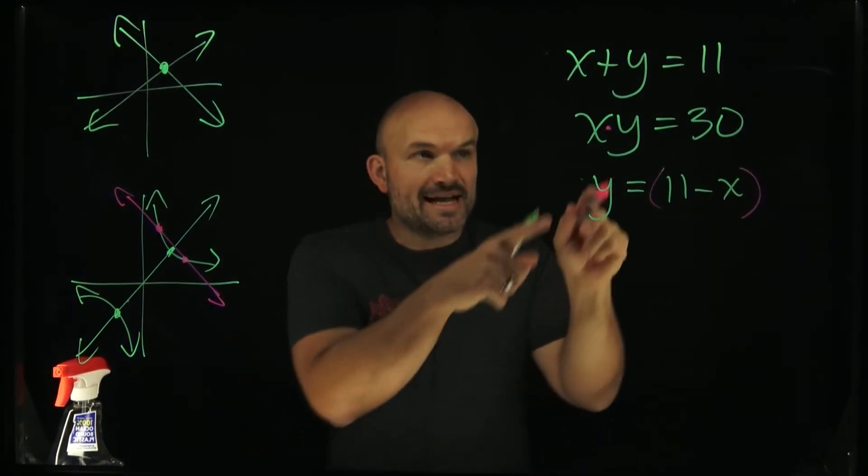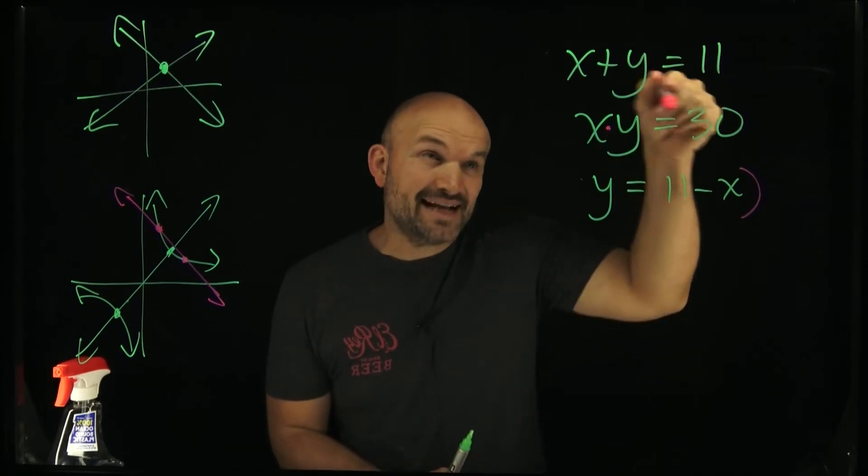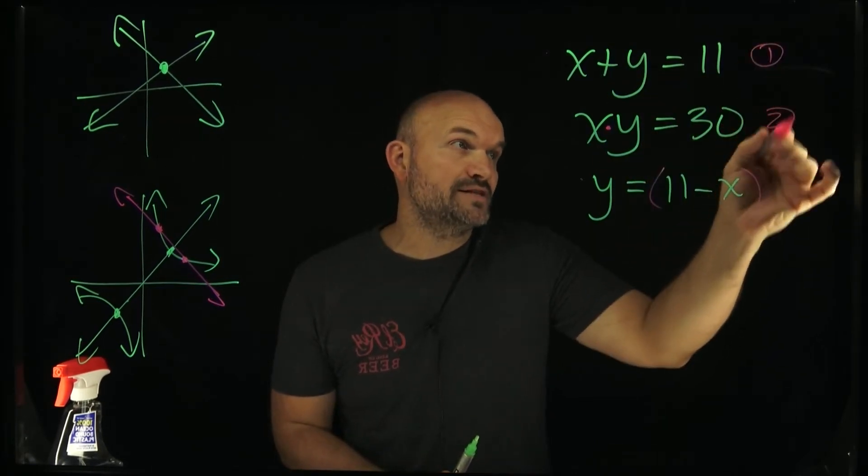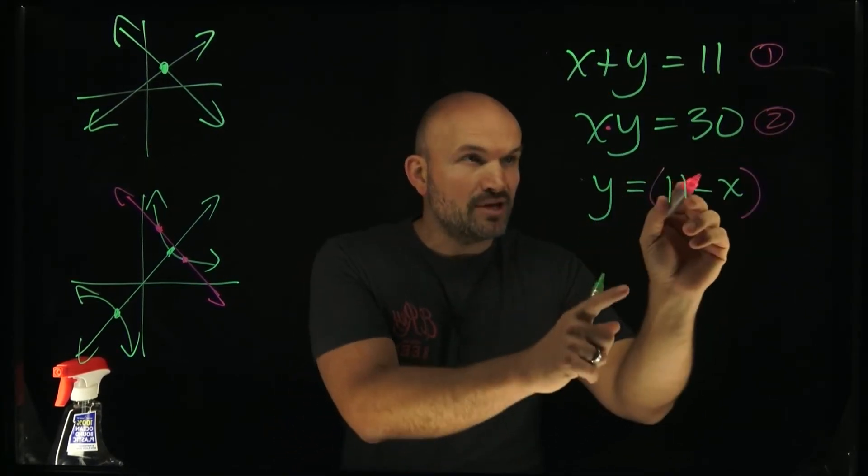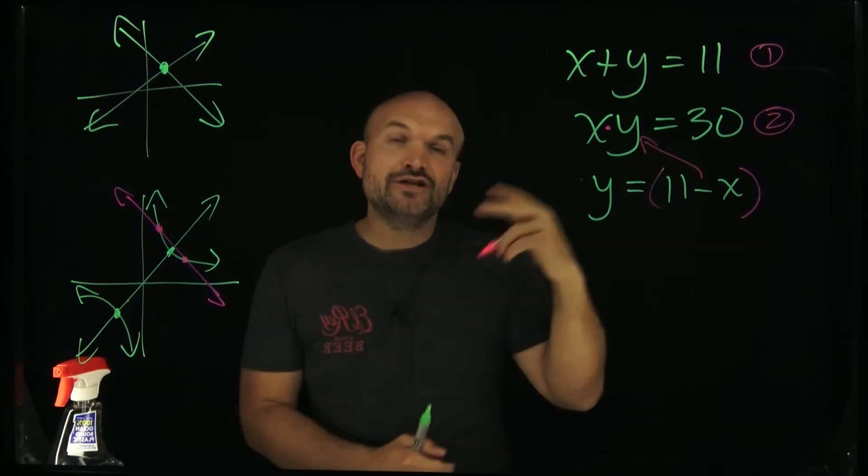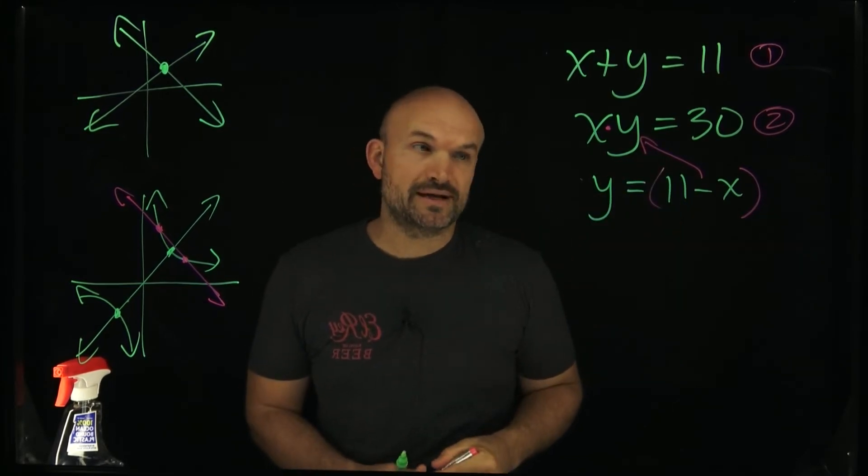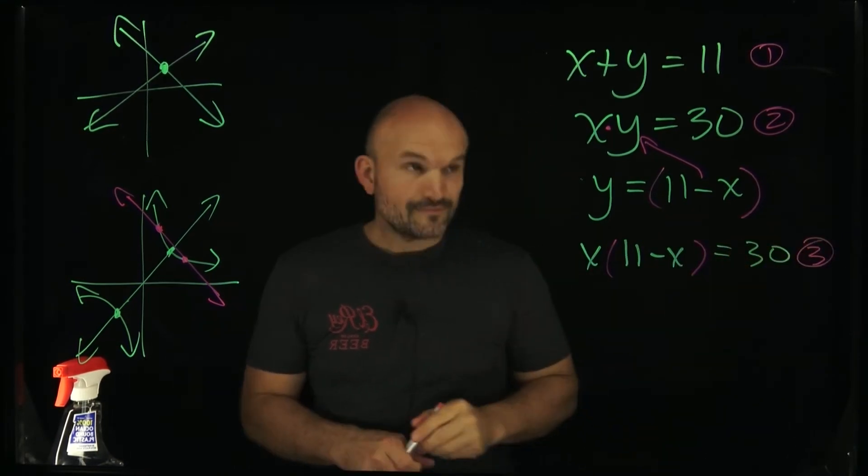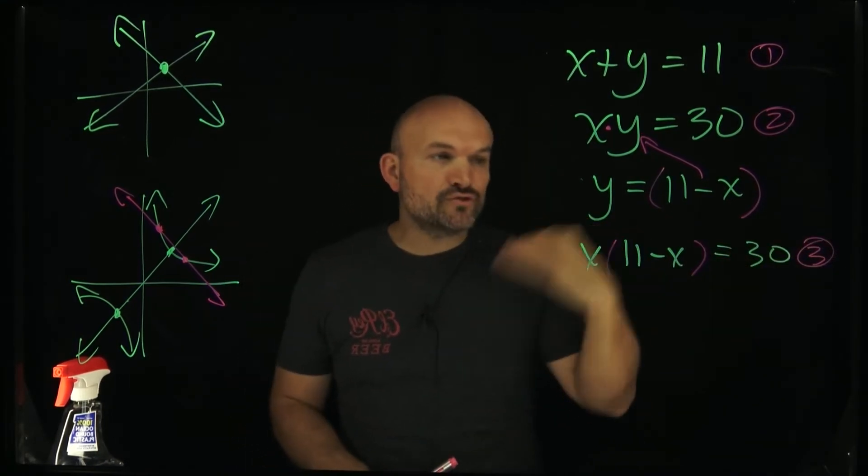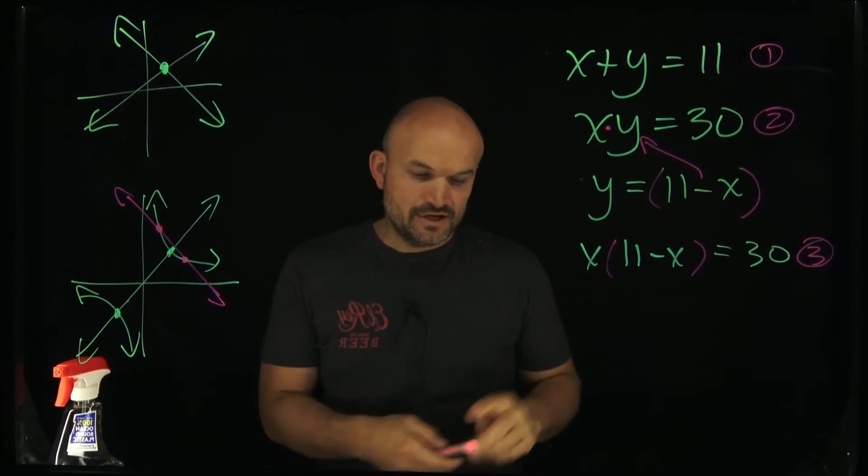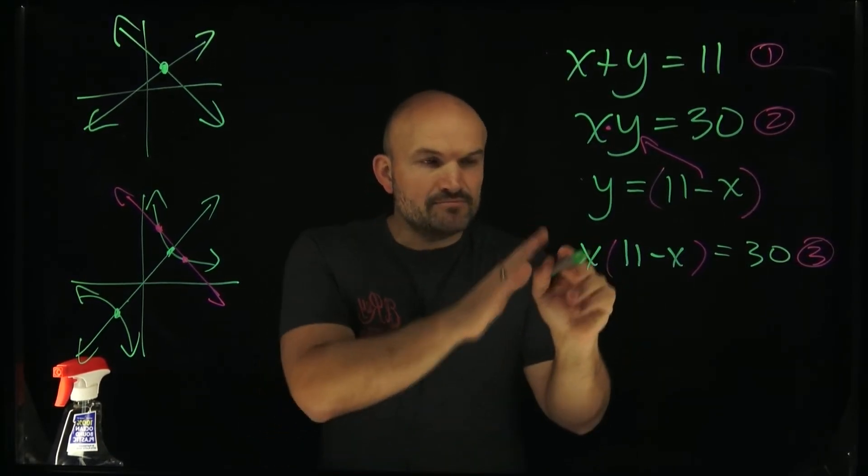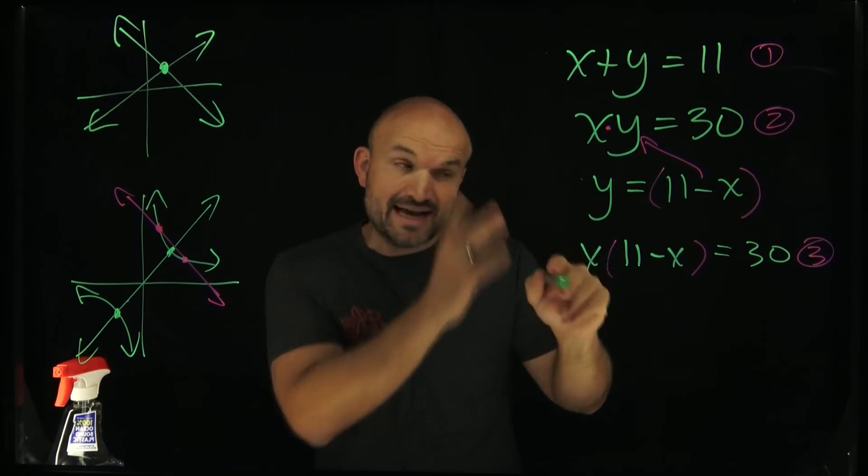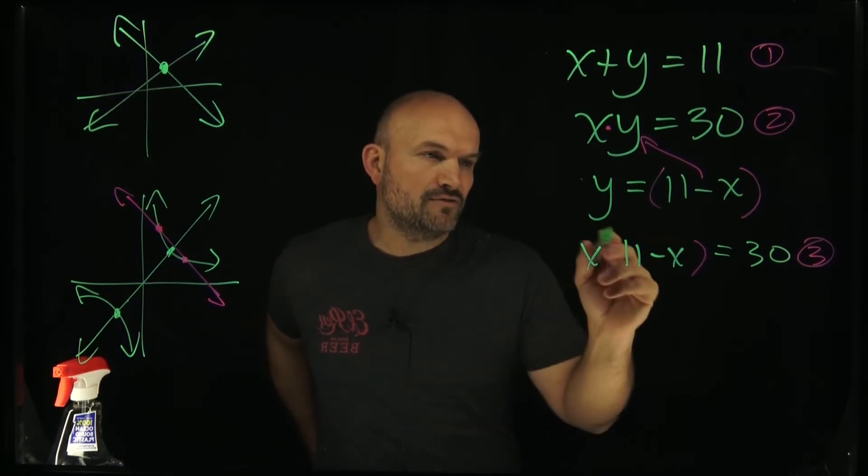Now what I can do is replace my value of y for my second equation. You can say this is equation one, this is equation two. Now what I can do is plug this into my second equation to create equation number three. And now I've created an equation that only has x's. So now I can distribute this x times 11 and x times the negative x to solve for x.